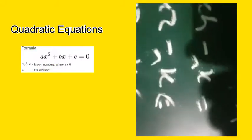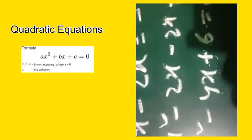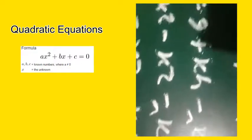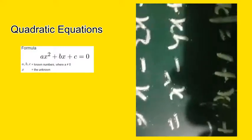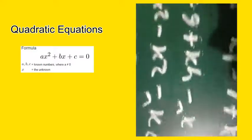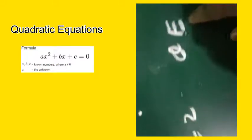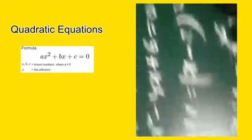So we get x squared minus 2x minus 2x, which combines to x squared minus 4x plus 6 equals 0. Here you can see the highest degree is 2, so this is a quadratic equation — it has degree 2, confirming it is a quadratic equation.